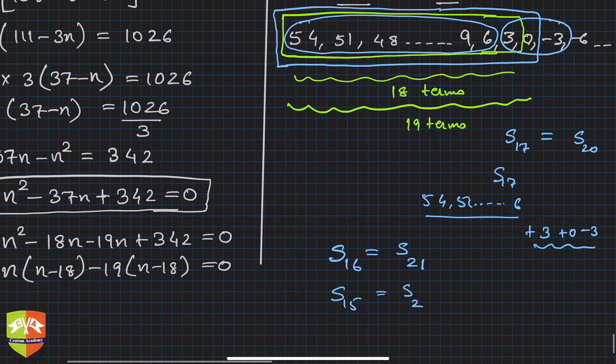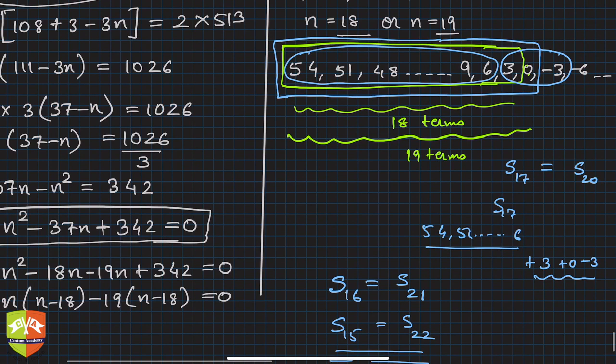For example, S_16 will be equal to S_21. Similarly, S_15 equals S_22, and so on. You could check why - because you're adding 3 and -3, or 6 and -6, so the sum is getting 0. I hope this is understood. Till S_17, we go to 6 and have one sum, then until S_20, you add 3, 0, and -3, which gets you the same sum.